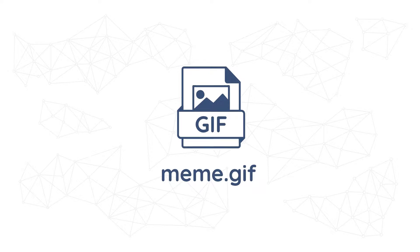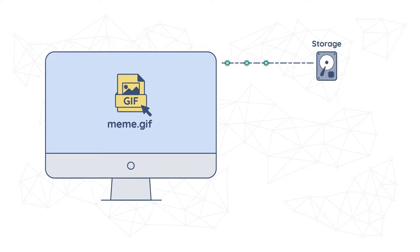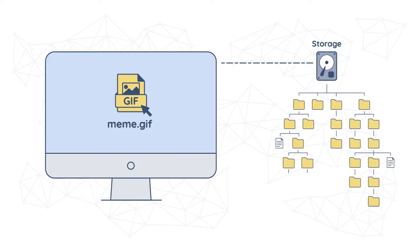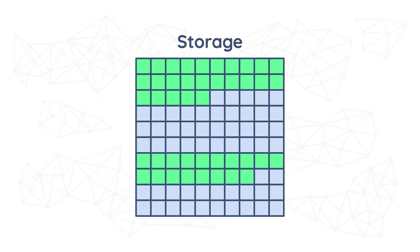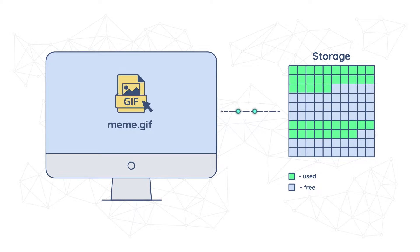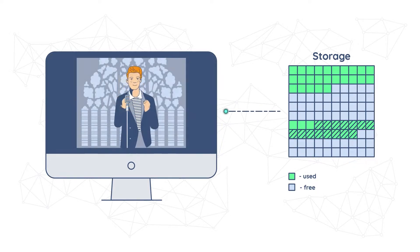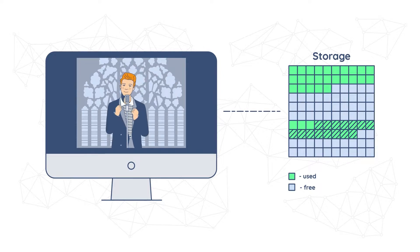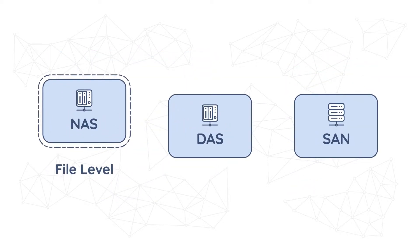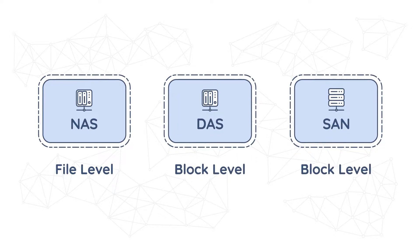On a file level, data is stored as a single piece of information inside a folder. To access that piece of data, the system needs to know the path to find it. Data stored in files is organized and retrieved using a limited amount of metadata that tells the system exactly where the file is being kept. On a block level, data is split into blocks stored as separate pieces. Each block has its own unique identifier, allowing the storage system to place smaller pieces of data wherever it's most convenient. These blocks are controlled by operating systems, and each block can be further formatted with the required file system. In a nutshell, NAS works on a file level, while DAS and SAN work on a block level.